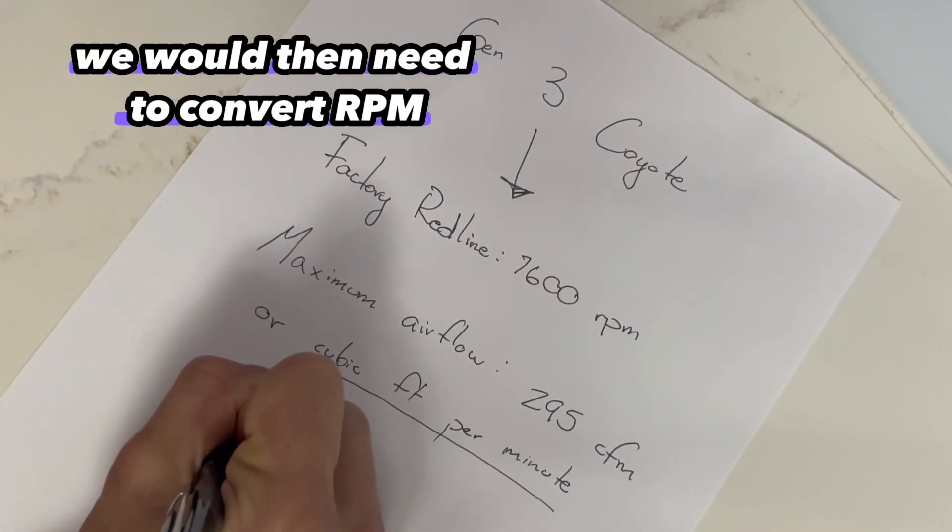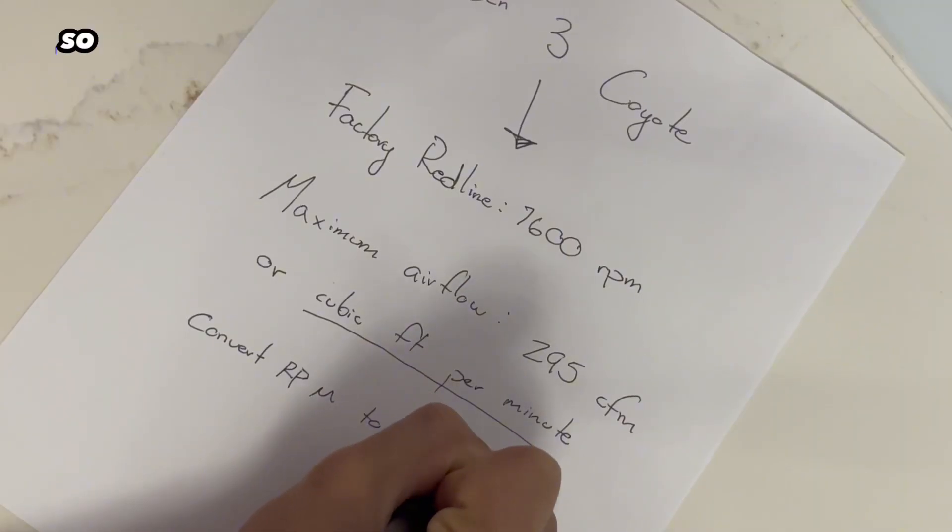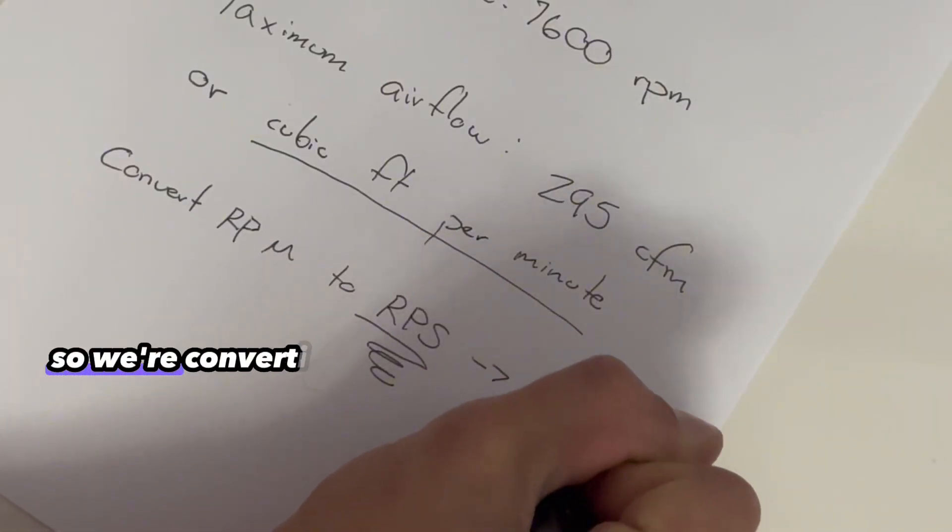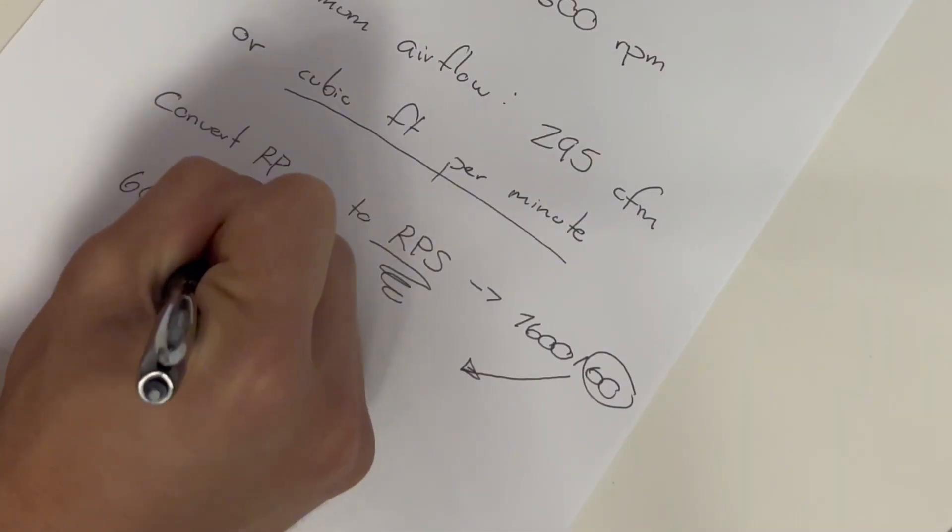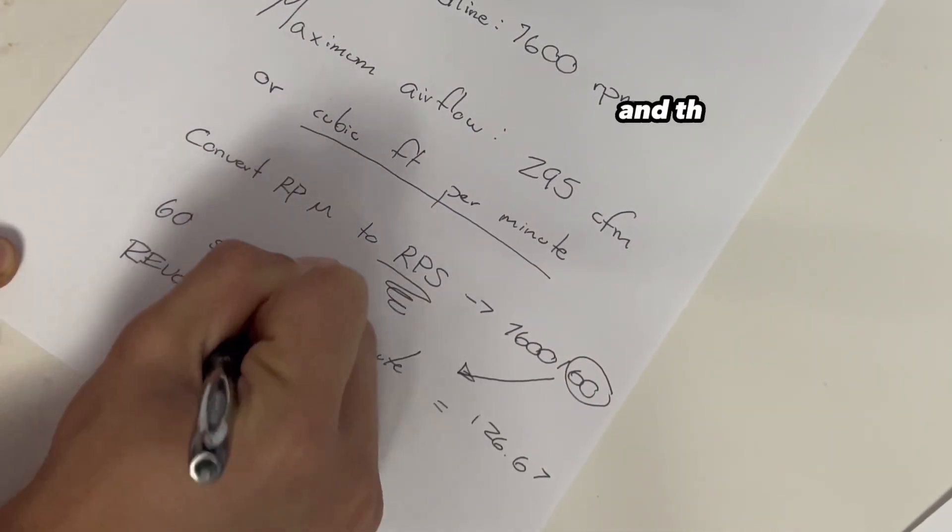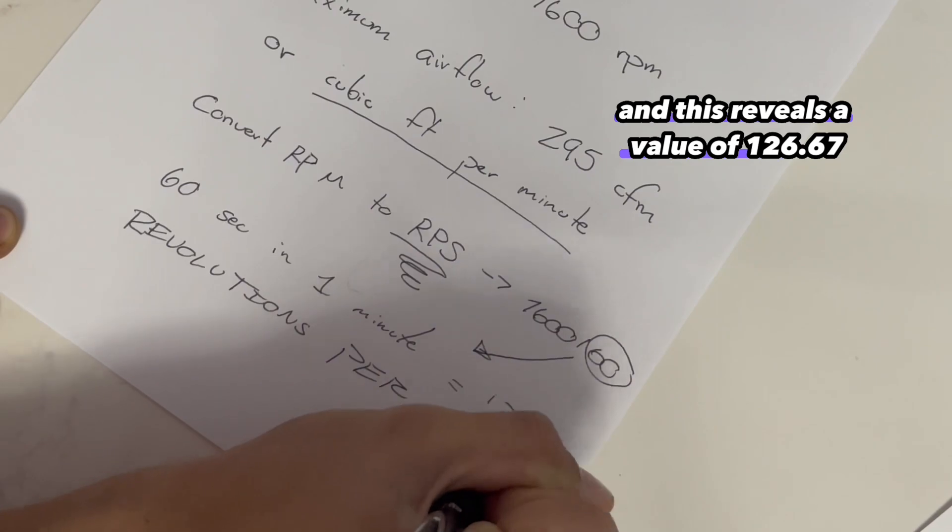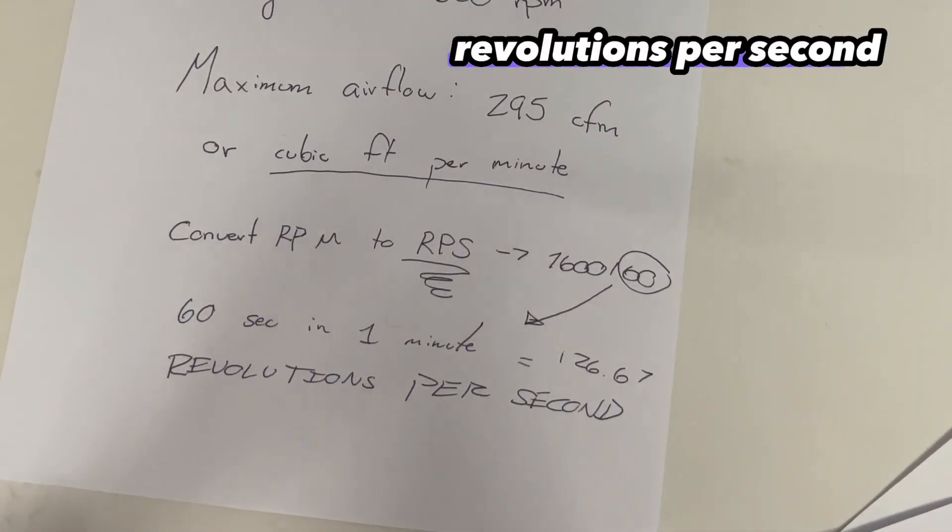To continue our calculation of VE of a stock Gen 3 Coyote, we would then need to convert RPM to revolutions per second. So we're converting 7,600 RPM because this is our factory redline, divide that by 60 because there are 60 seconds in one minute and this reveals a value of 126.67 revolutions per second.